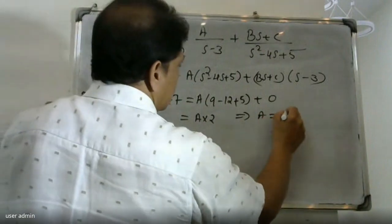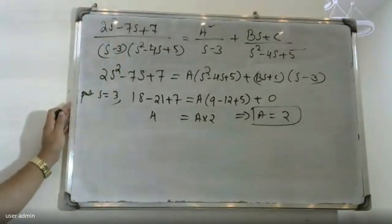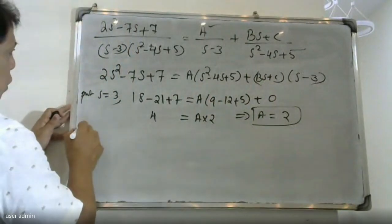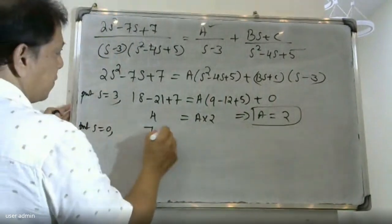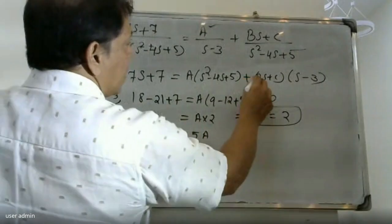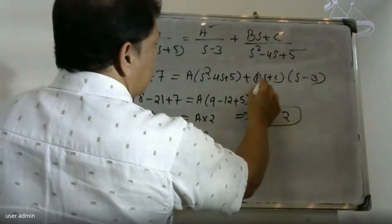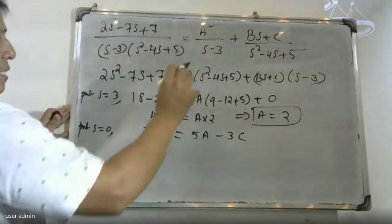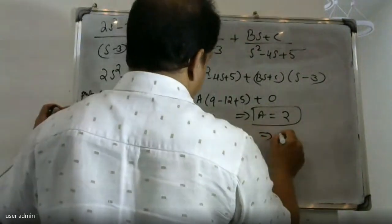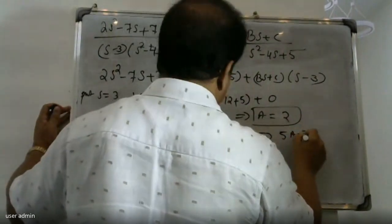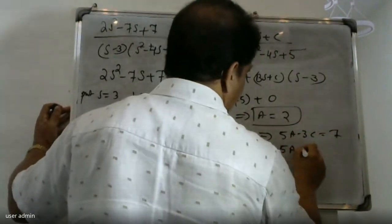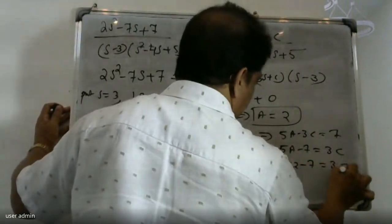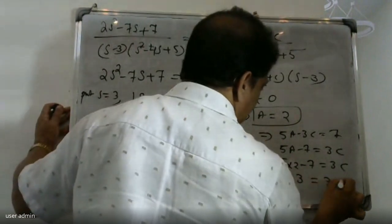Solving the system of equations from partial fractions, the value of A is equal to 2 and the value of B is equal to 0. We also find that 5A minus 3C is equal to 7, so 5A minus 7 equals 3C. Substituting A equals 2 gives 10 minus 7 equals 3, so C equals 1.